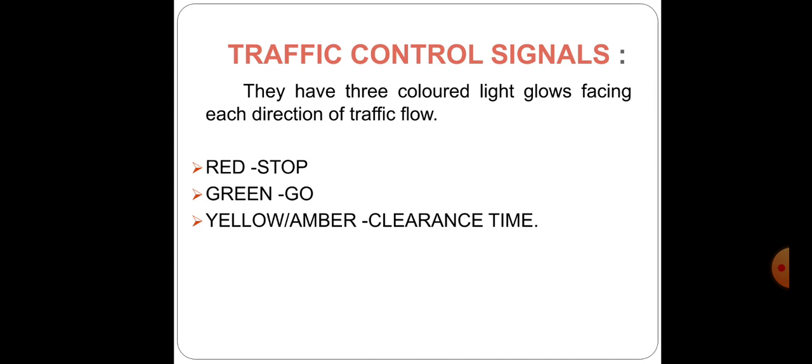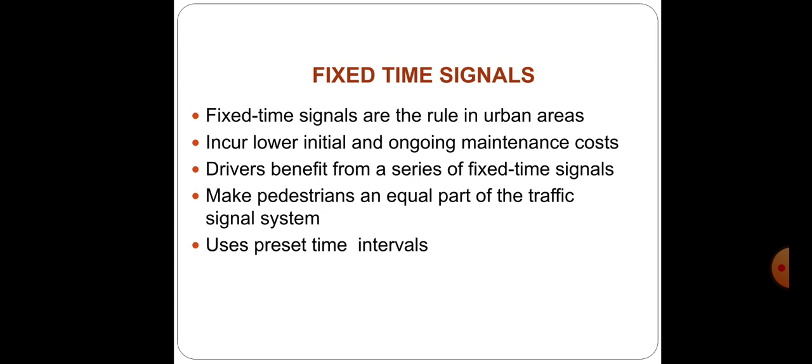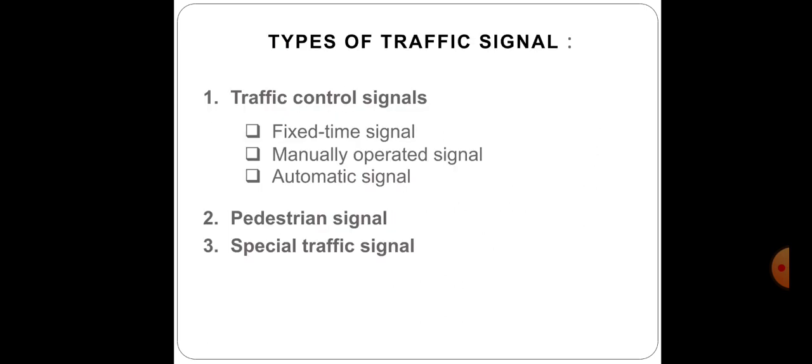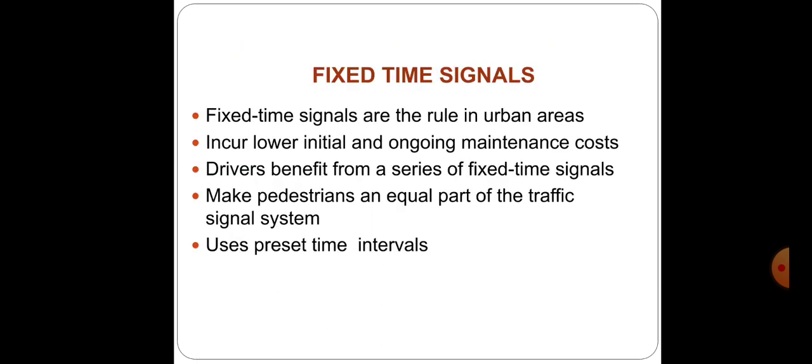There may also be additional signals showing green lights for separate turning movements and traffic movements, which may be provided if necessary. Now, the three types of traffic control signals are: fixed time signals, manually operated signals, and automatic signals. The fixed time automatic traffic signal is a type that keeps repeating the same set of signals over a preset cycle of time.